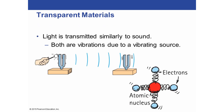Even though sound and light are two different types of waves — light being a transverse wave and sound being a longitudinal wave — both types of waves are caused by vibrations from a vibrating source, so they are similar in that respect.